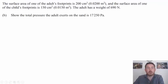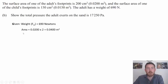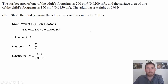In question B, we're given the surface area of both the adult and child and the adult's weight, and asked to show that the total pressure the adult exerts is 17,250 pascals. Using the GUESS method: weight of the adult is given, and the area is one footprint multiplied by two, giving 0.0400 meters squared. The equation is P equals F divided by A. Substituting and solving gives us 17,250 pascals. Identifying the need to double the area makes this a merit level response.